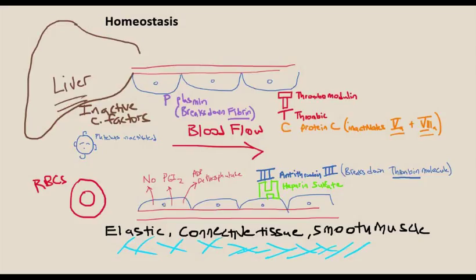Some agents the endothelial cells secrete to inhibit clotting when unnecessary include nitric oxide, prostaglandins, ADP, plasmin which breaks down fibrin, thrombomodulin, protein C, and heparin sulfate. Blood flow is important for bathing ourselves with nutrients and disposing of waste, but it also decreases the chances of these factors bumping into each other and clotting.